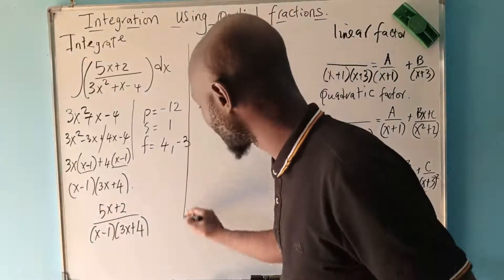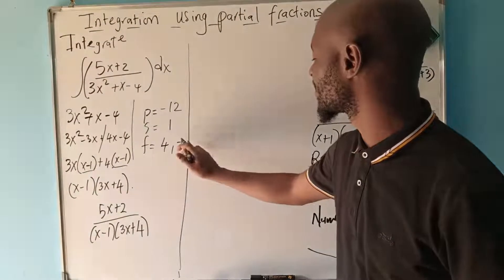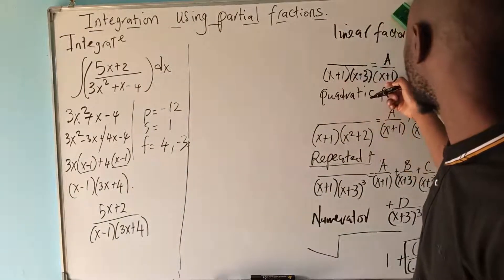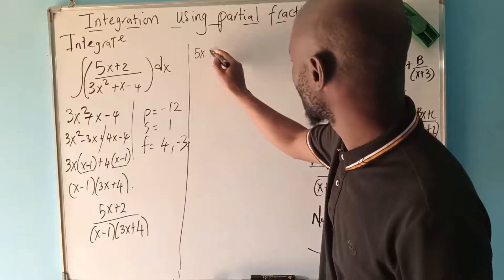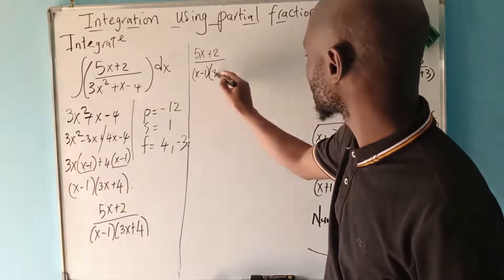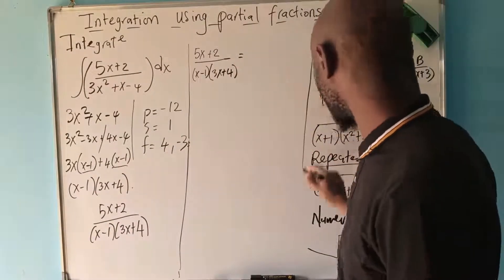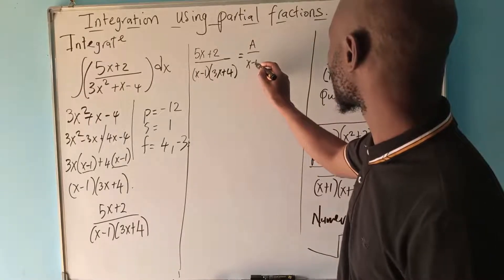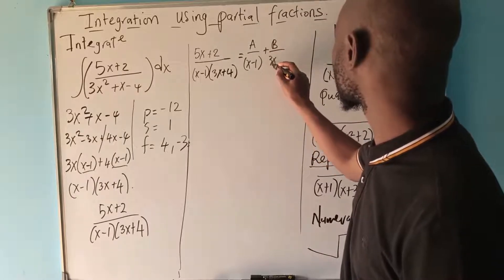So the partial fractions will spin out like this. We can now convert the expression into partial fractions because we know we have linear factors. We are going to have 5x plus 2 over x minus 1 times 3x plus 4, which decomposes to A over x minus 1, plus B over 3x plus 4.